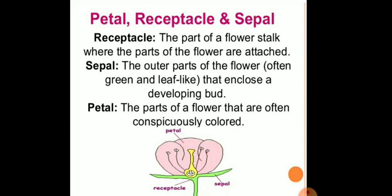The next part is the receptacle, which is the part of the flower stalk where the parts of the flower are attached. The sepals are the outer part of the flower; they are green in colour, have a leafy structure, and enclose the developing bud.